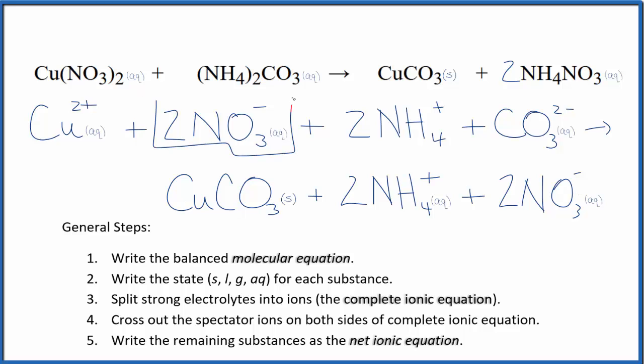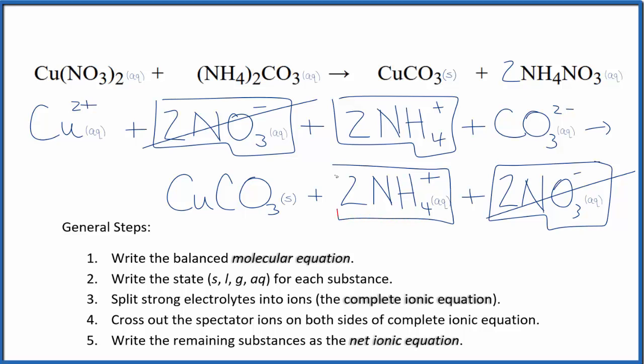I have two nitrate ions here in the reactants, and two nitrate ions in the products. These are spectator ions. We can cross the spectator ions out, two ammonium ions, and then again in the products, two ammonium ions. Those are spectator ions. We cross those out.